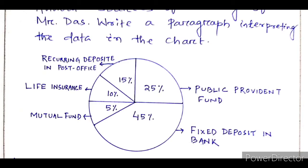First, 25 percent of his total earnings he saves in the Public Provident Fund. 45 percent of his total earnings he saves in Fixed Deposit in the bank. 5 percent he saves in Mutual Fund. For Life Insurance, he saves 10 percent of his income. And in Recurring Deposit in the Post Office, he saves 15 percent of his total earnings.